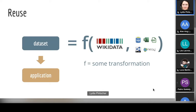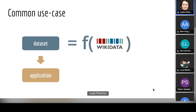Even the SPARQL endpoint of Wikidata fits here: it takes the JSON from the original Wikibase, constructs a function of it which is the SPARQL endpoint, and the resulting dataset can be reused. A common use case is to just reuse Wikidata without combining it with other datasets. Today I'll focus mostly on that, even though the tools we have actually support the bigger use case as well.